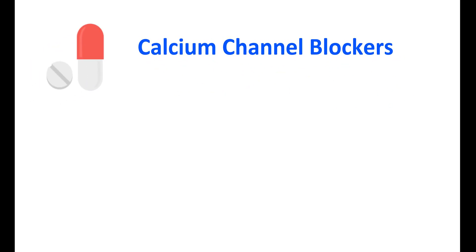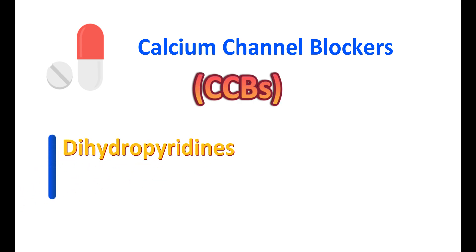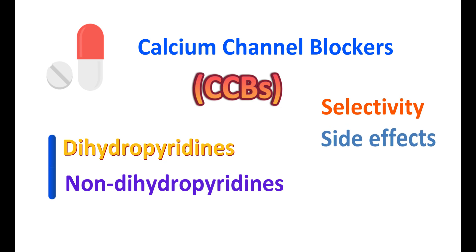Calcium channel blockers are one group of medications commonly known as CCBs. They can be classified into two categories: dihydropyridines and non-dihydropyridines. Even though these two categories of drugs are both blocking calcium channels, they are not equivalent chemically or pharmacologically. They differ in their selectivity of target, their side effects, and their clinical uses.